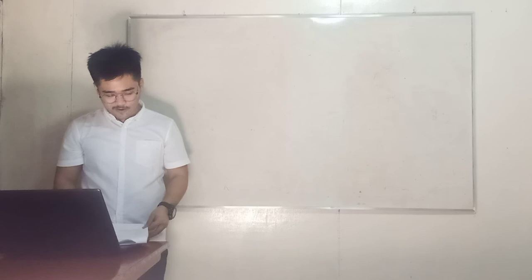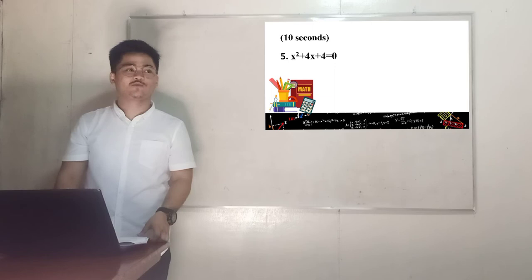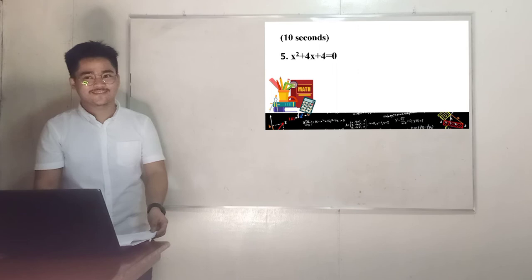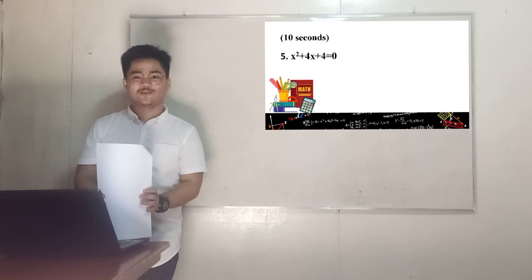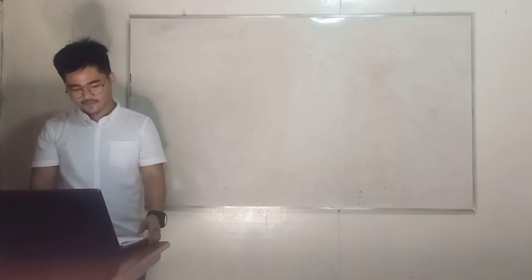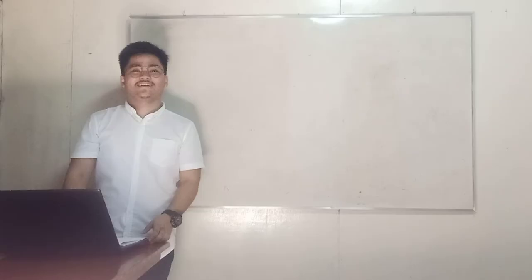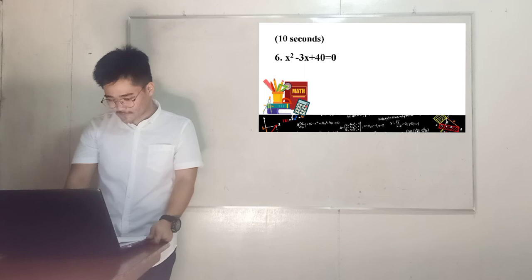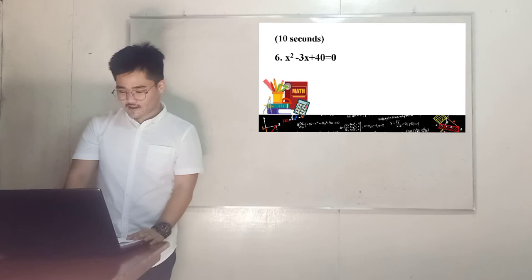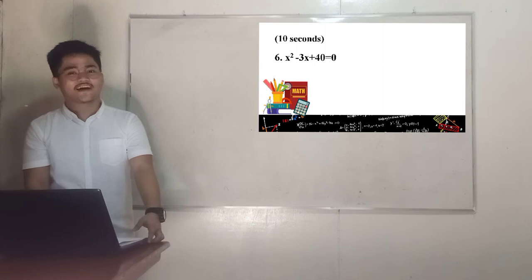Now, number 5: We have x squared plus 4x plus 4 equals 0. Time starts now. Okay, time's up. Raise your boards. Green team got the correct answer, orange team got the correct answer. Very good.